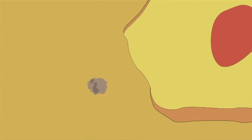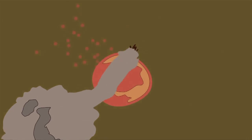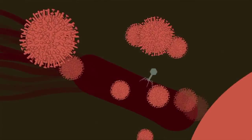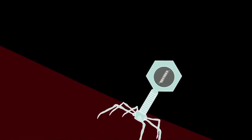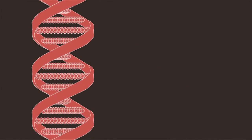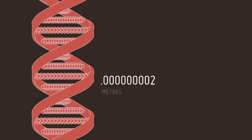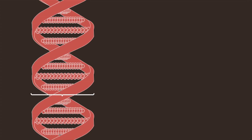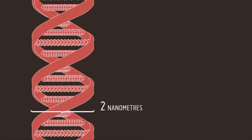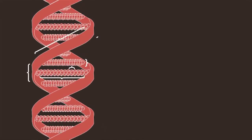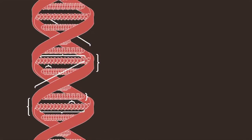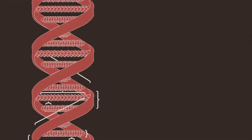We can't see things this small. A bacterium is about 2 micrometers. Smaller still are viruses and phages. And so we go down to DNA, our molecular blueprints. DNA is 2 billionths of a metre in diameter, or more conveniently, 2 nanometres — the units we use to measure the building blocks of everything. Welcome to the nanoscale.